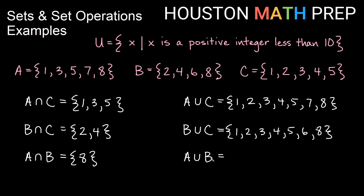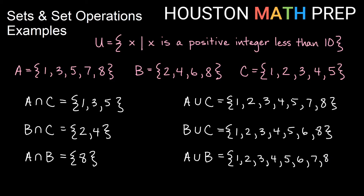For A union B — A or B, or both — we have 1, 3, 5, 7, 8 from A and 2, 4, 6, 8 from B. I get odds mostly from A and evens mostly from B. So: 1 from A, 2 from B, 3 from A, 4 from B, 5 from A, 6 from B, 7 from A, and 8 from both of them. That gives us 1 through 8 for our A union B.